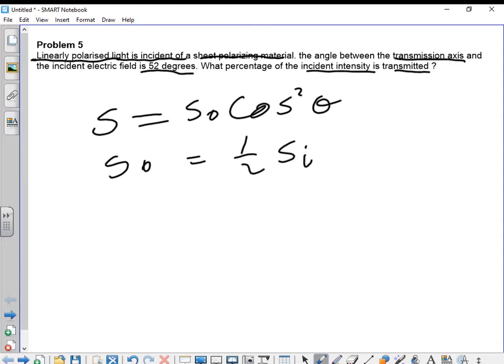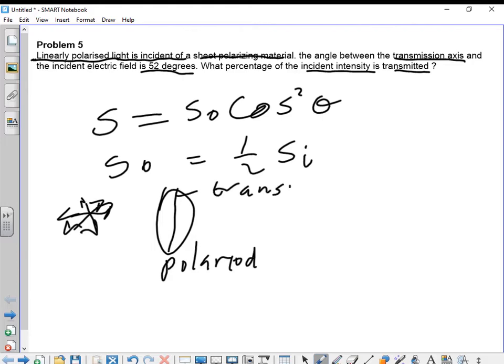So this is how this looks like. You have unpolarized light like this, and then you have a polaroid. This is your transmission axis.